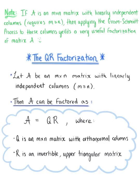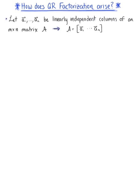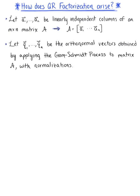This is a really useful factorization, but where does it come from? Let's look at how we derive this factorization. To see how the QR factorization of matrix A arises, we begin by letting vectors A sub 1 through A sub n be the linearly independent columns of an M by N matrix A. We also let vectors Q sub 1 through Q sub n be the orthonormal vectors obtained by applying the Gram-Schmidt process to matrix A with normalizations.